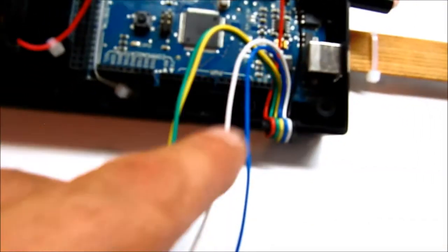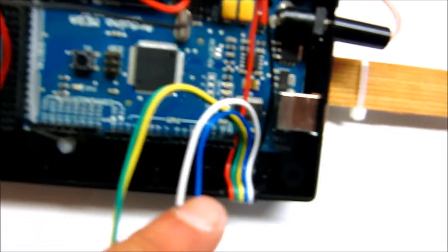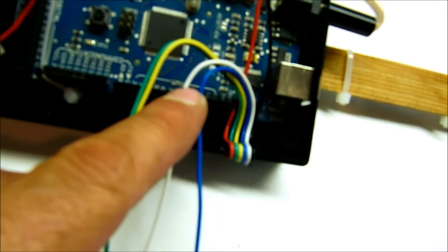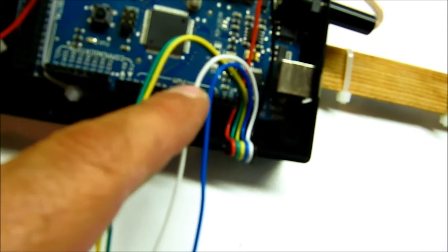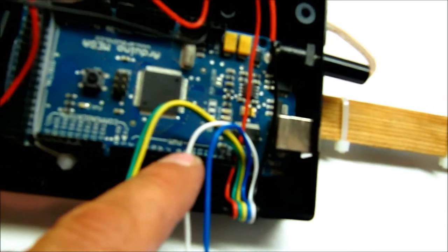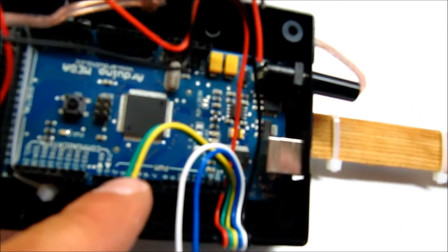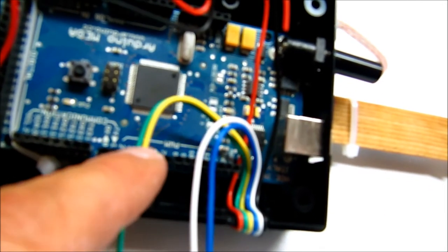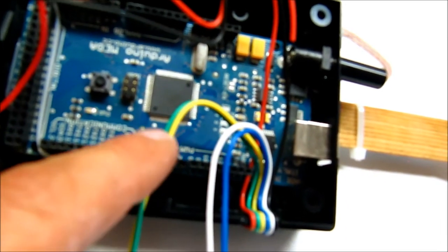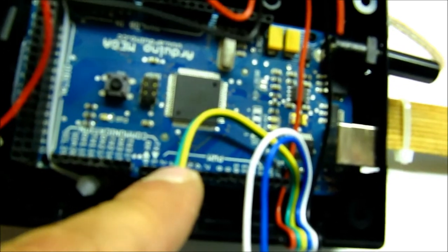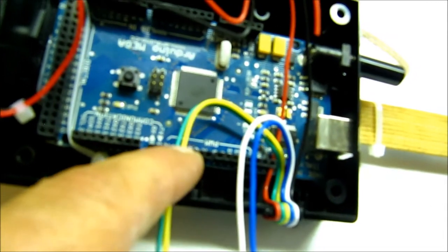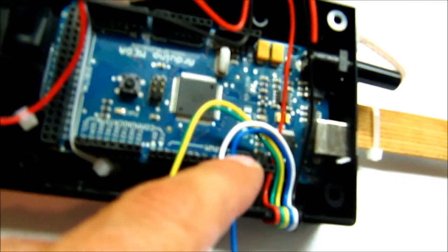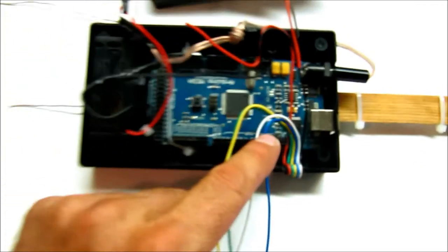The blue and white wires here: the blue wire is going to connect to pin 10 in the PWM area on the Arduino board, the pulse width modulation area, and the white wire will connect to pin 9. And the yellow wire here will connect to pin 4 and the green wire will connect to pin 3. So I've got green to 3, yellow to 4, white to 9, blue to 10.